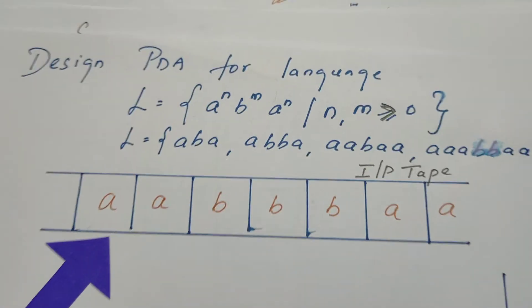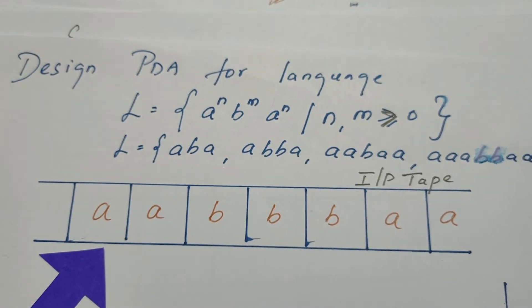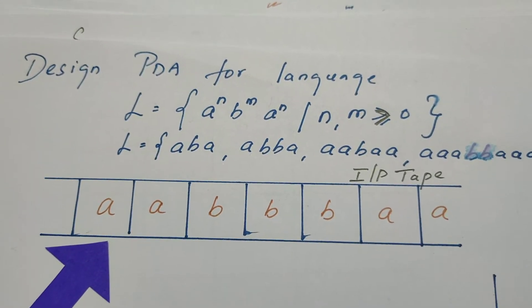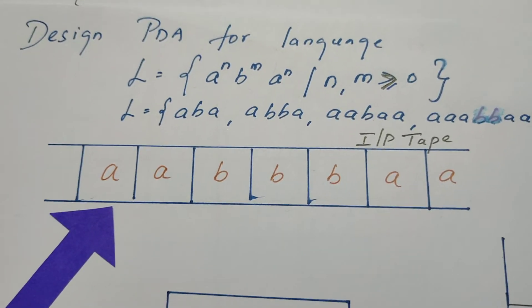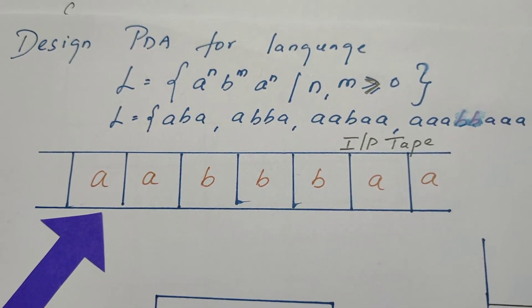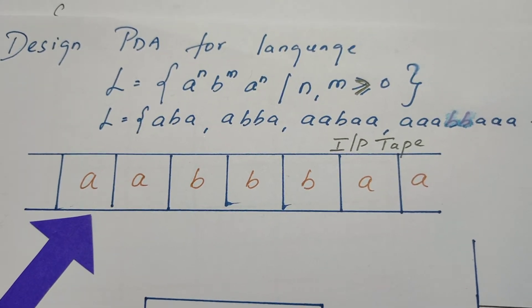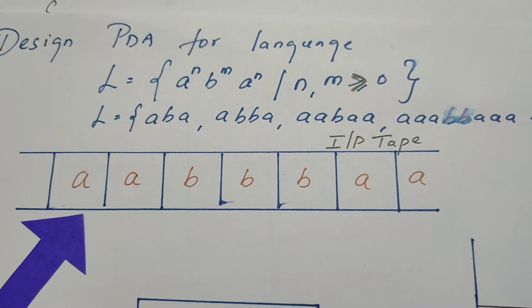In this video we are going to see the design of pushdown automata. I have taken a language which describes a pattern a power n b power m a power n, where n and m values are greater than zero.